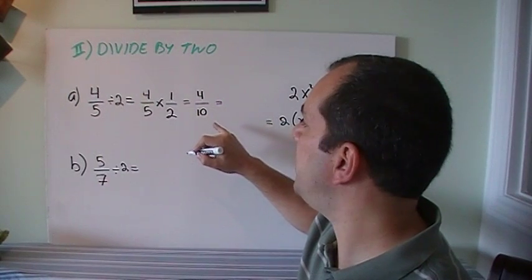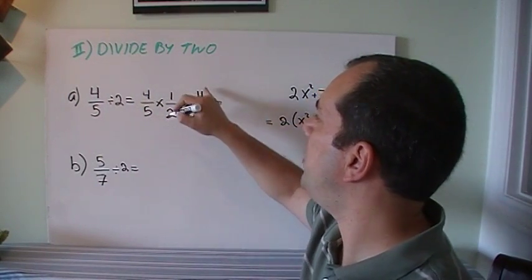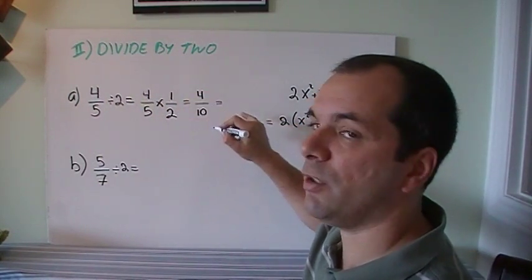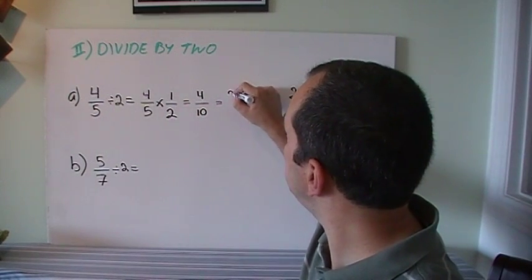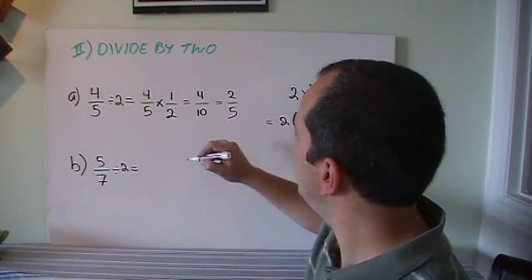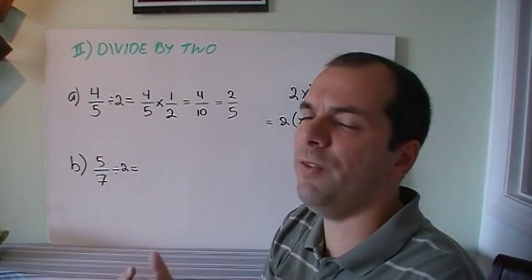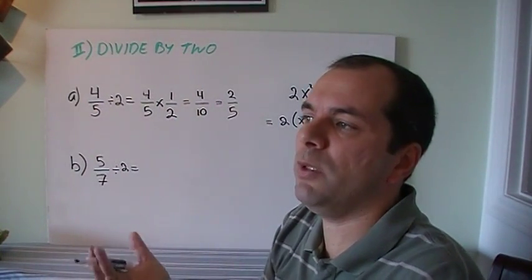And now I can simplify. I should have simplified right over there. But if I didn't, it's 4/10. I can divide by 2, and that's just 2/5. Which is what I was telling you. If I got 4 fifths, 4 of anything, half of that would be 2 of whatever.